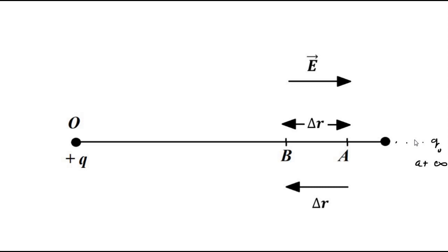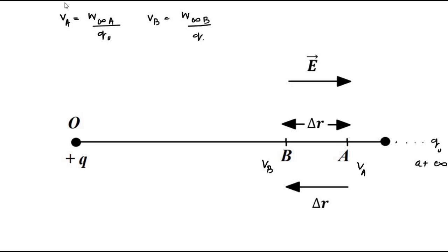The unit positive test charge is first moved to point A, so the electric potential is V_A, and then it is moved to point B where the potential is V_B. V_A is simply the work done in moving the charge from infinity to A divided by the test charge value, and V_B is the work done in moving the charge from infinity to B divided by the test charge. The potential difference between B and A, since V_B is greater than V_A, is simply the work done in moving the charge from A to B divided by Q₀.